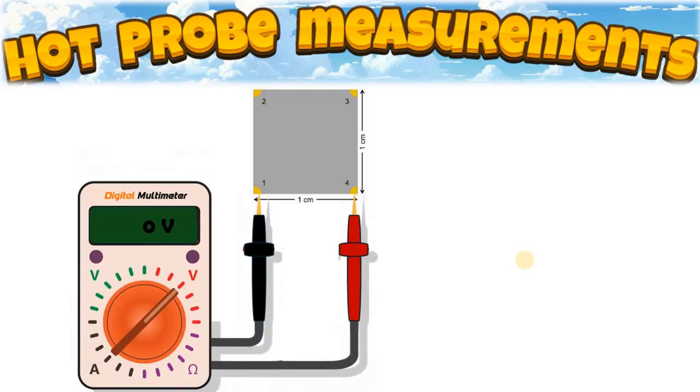First of all, we place the semiconductor sample on a non-conductive surface. Then we place two electrical probes on the semiconductor, one on the hot side and the other one on the cold side. These probes are connected to a voltmeter to measure the voltage difference.